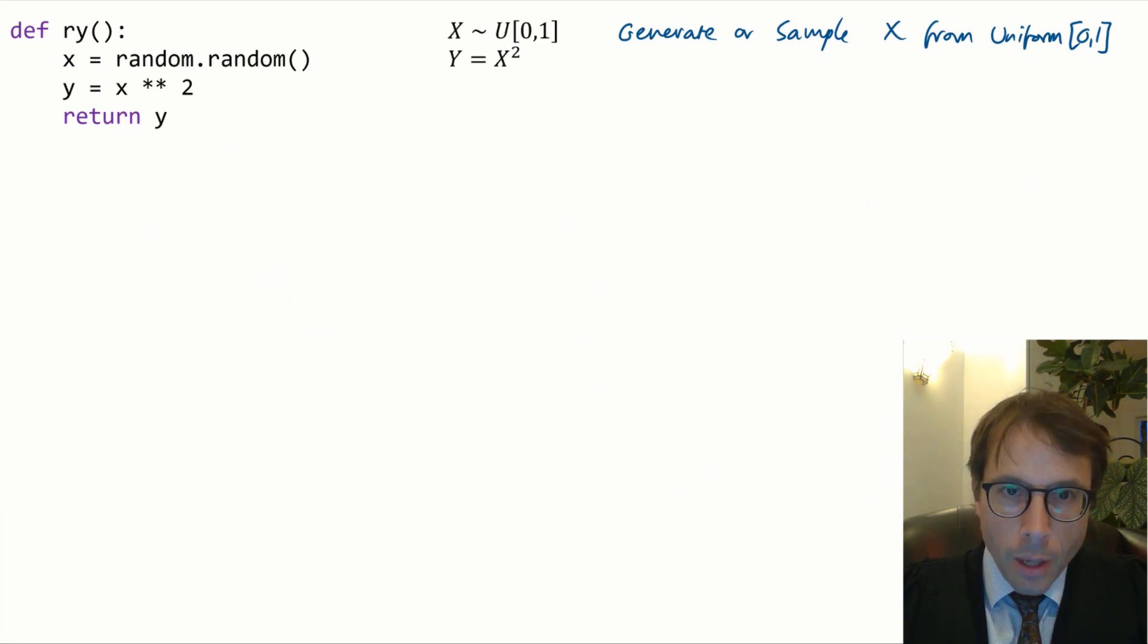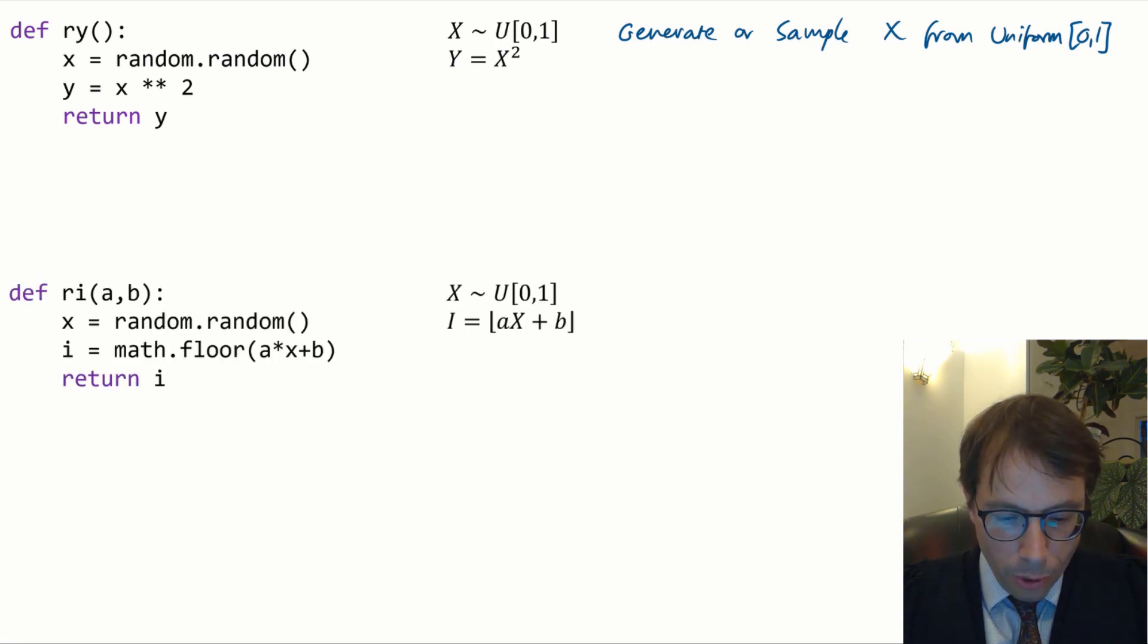Next example. This code generates a random variable x and then it generates a random variable y. And I've written them in capital letters. That's the convention uppercase for random variables. Every time we run the code we get a different value for x and different value for y. a and b are just plain values, so we use lowercase for those.